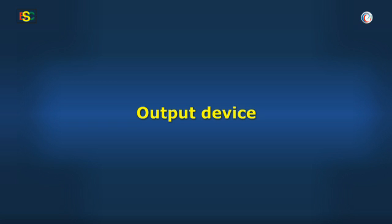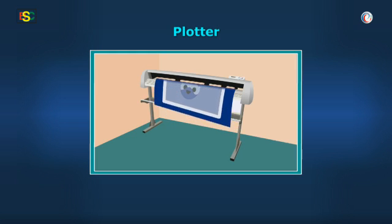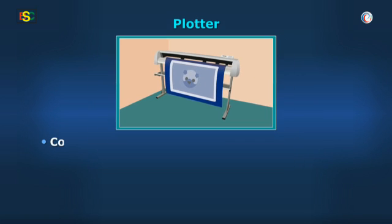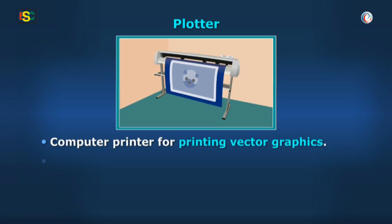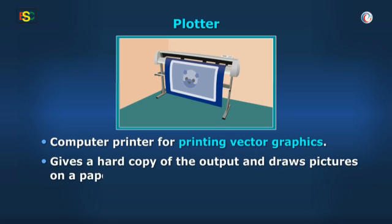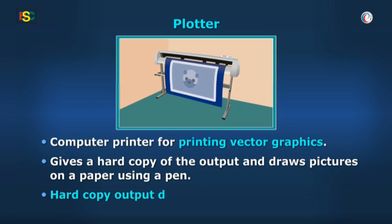Let's discuss another output device — the plotter. A plotter is a computer printer for printing vector graphics. It gives a hard copy of the output and draws pictures on a paper using a pen. Nowadays, plotters are replaced with wide-format conventional printers. It is also an example of hard copy output devices.